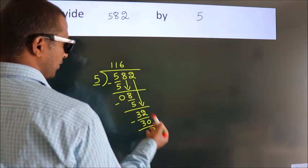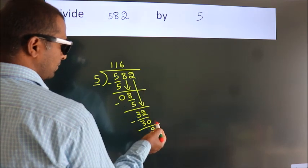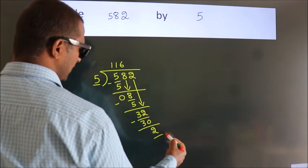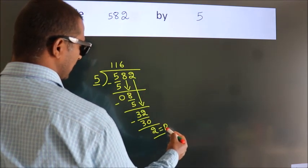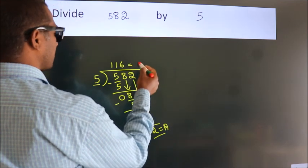After this, no more numbers to bring down, so we stop here. This is our remainder. This is our quotient.